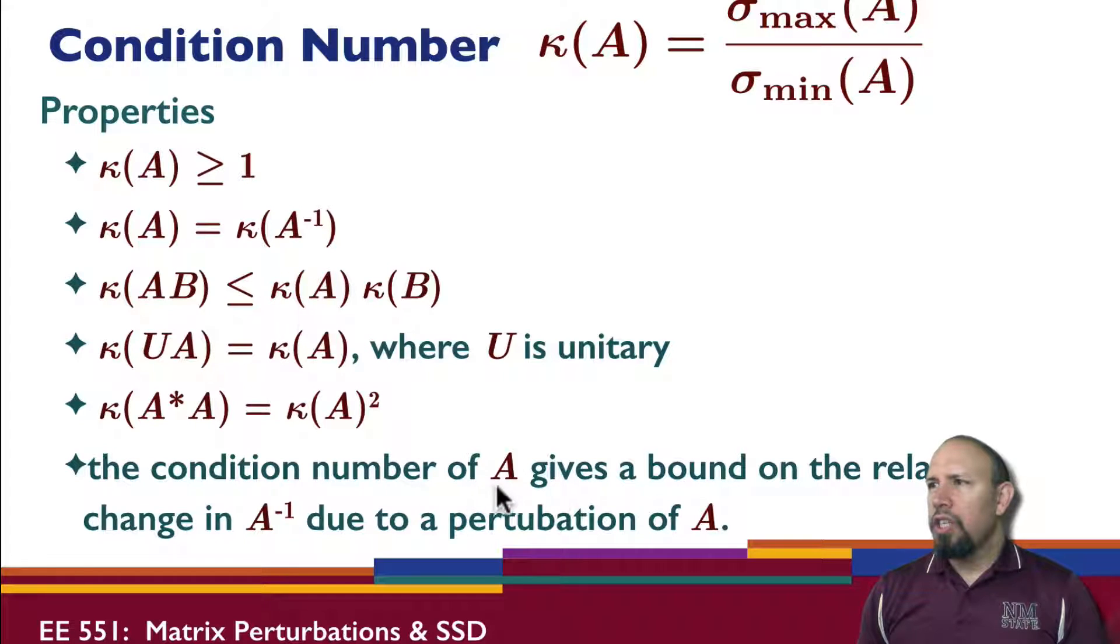If we have A adjoint times A, the condition number of that is actually equal to the condition number of A quantity squared. The condition number basically gives a bound on the relative change in A inverse due to a perturbation of A. That's related to our perturbation problems.